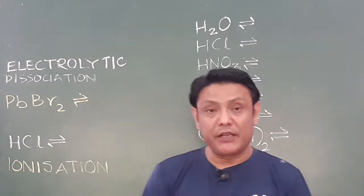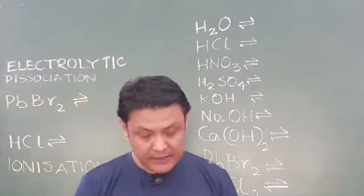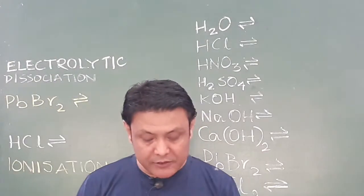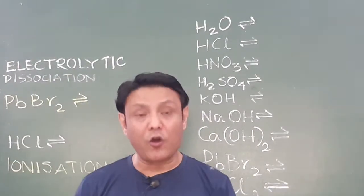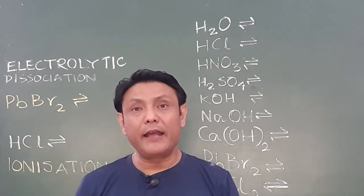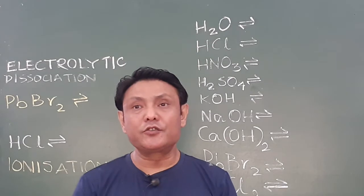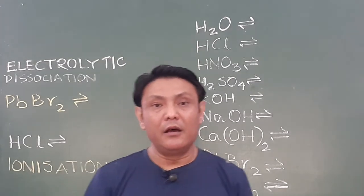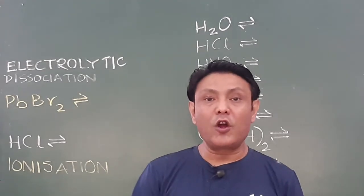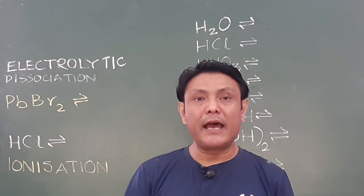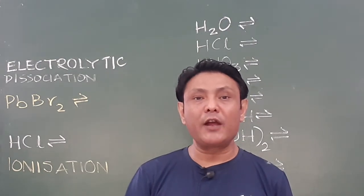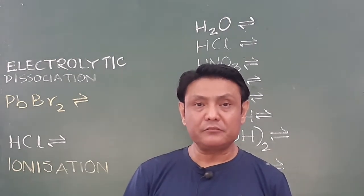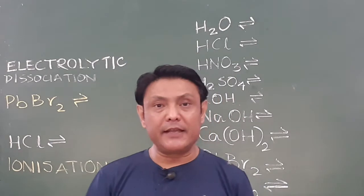Degree of dissociation is the extent to which an electrolyte dissociates or breaks up. Strong electrolytes are strong acids, strong bases, and salts of strong acids and bases — they are good electrolytes, they are strong electrolytes.